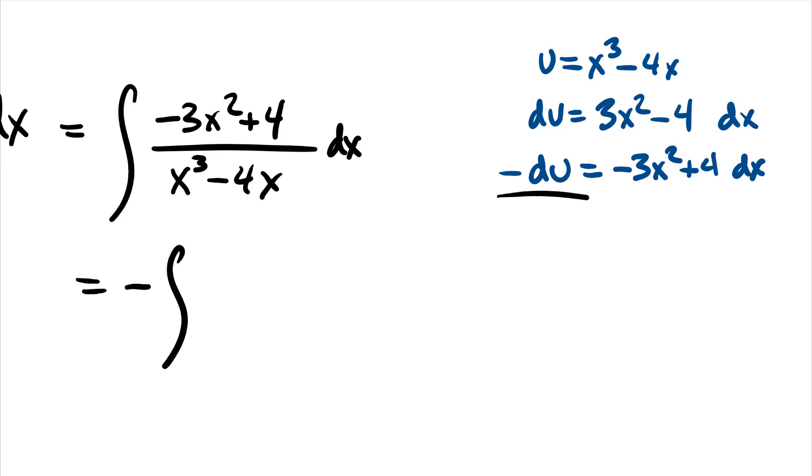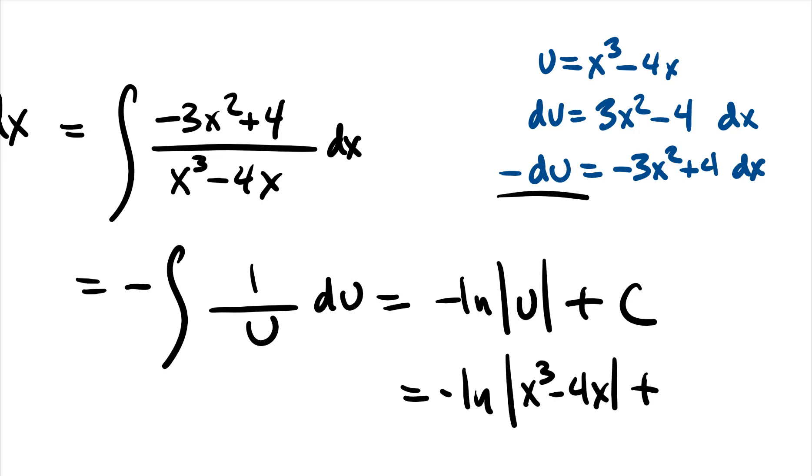We'd get a negative from here, we get our u down below. There it is, the negative natural log of the absolute value of u plus c, which is equal to the negative natural log of x cubed minus 4x, all plus c. And there's our solution.